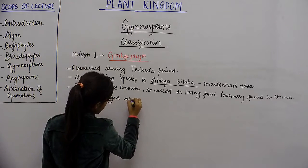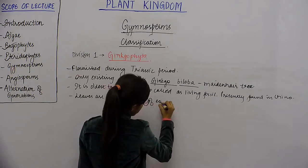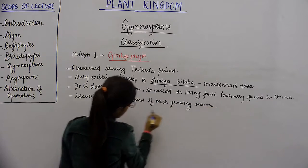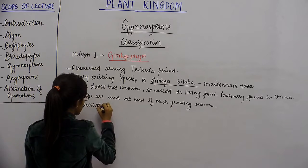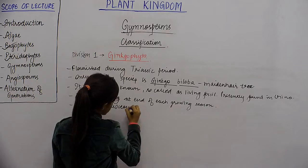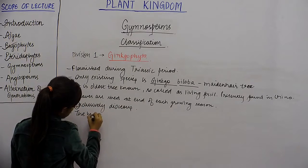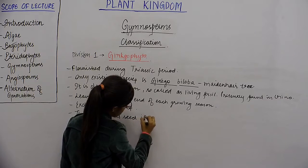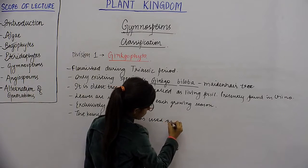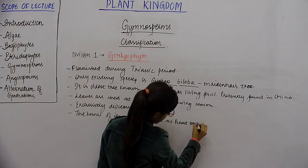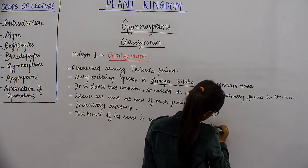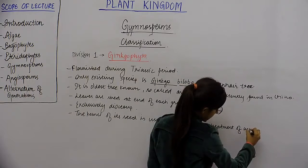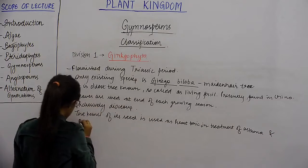The leaves are shed at the end of each growing season. It is exclusively dioecious, and the kernel of its seed is used as a heart tonic and in the treatment of asthma and diseases like Alzheimer's disease.